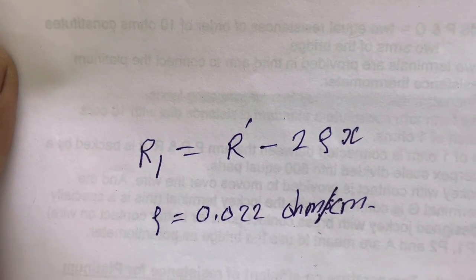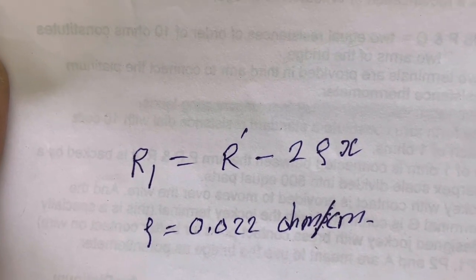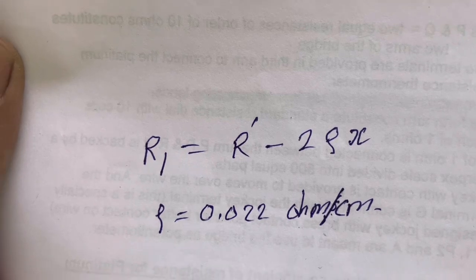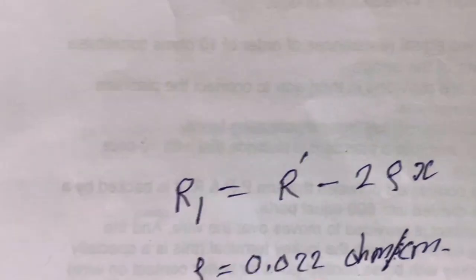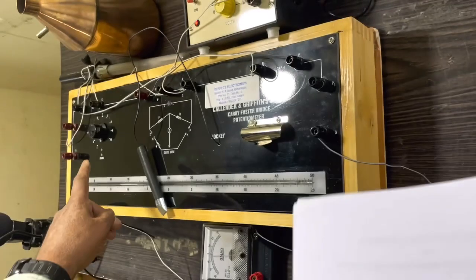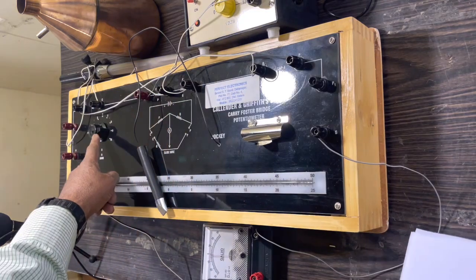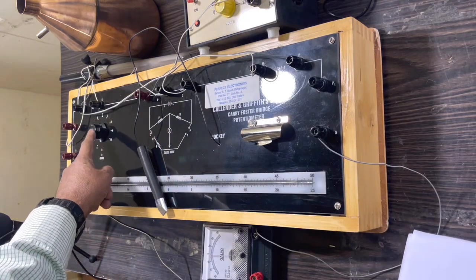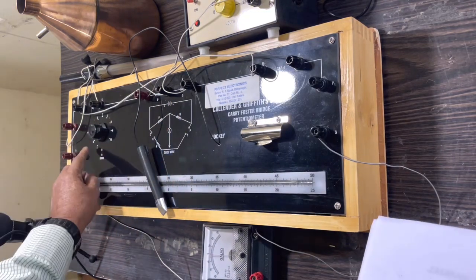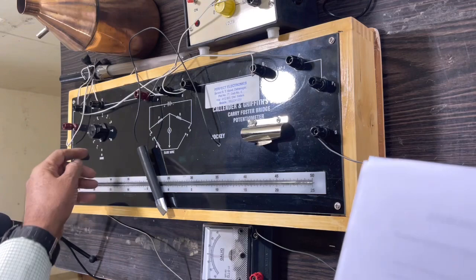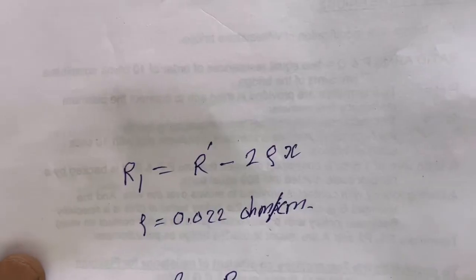R1 is the resistance of the platinum wire at room temperature. R' is the resistance of resistance R in the bridge, and it is kept at 3 ohms.